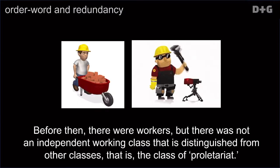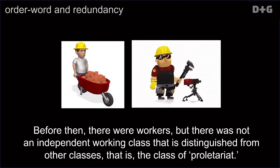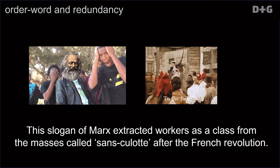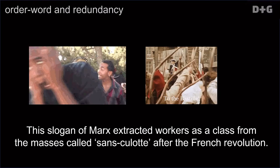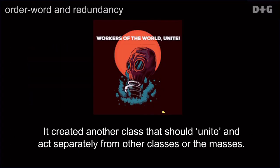Before then, there were workers, but there was not an independent working class that is distinguished from other classes, that is, the class of proletariat. This slogan of Marx extracted workers as a class from the masses called sansculottes. After the French Revolution, it created another class that should unite and act separately from the other classes or the masses.